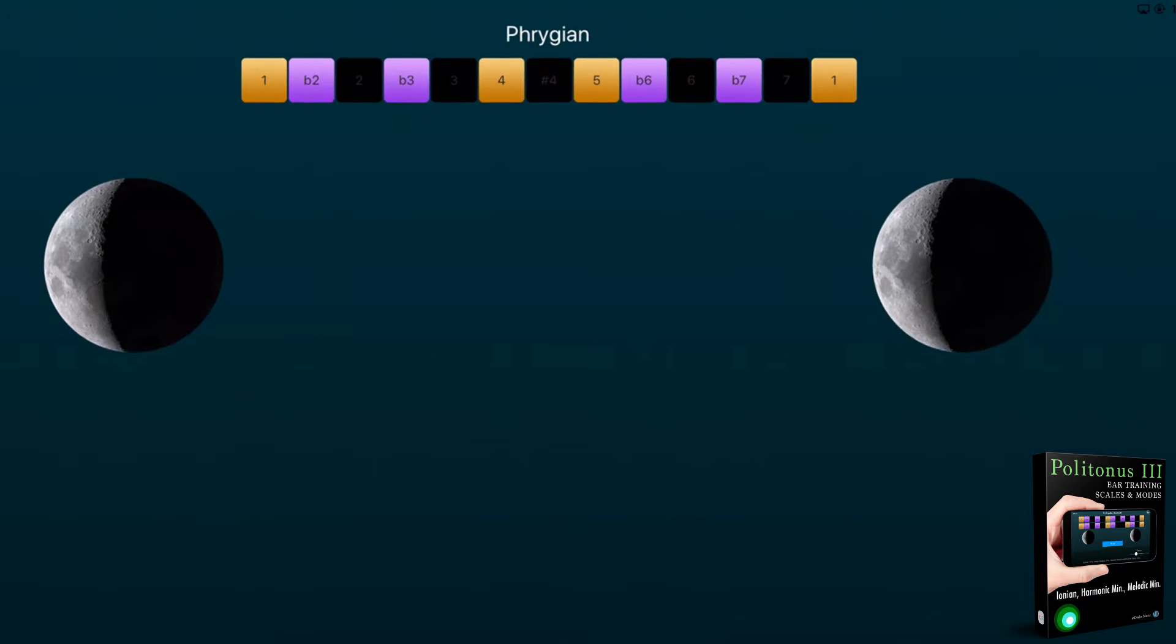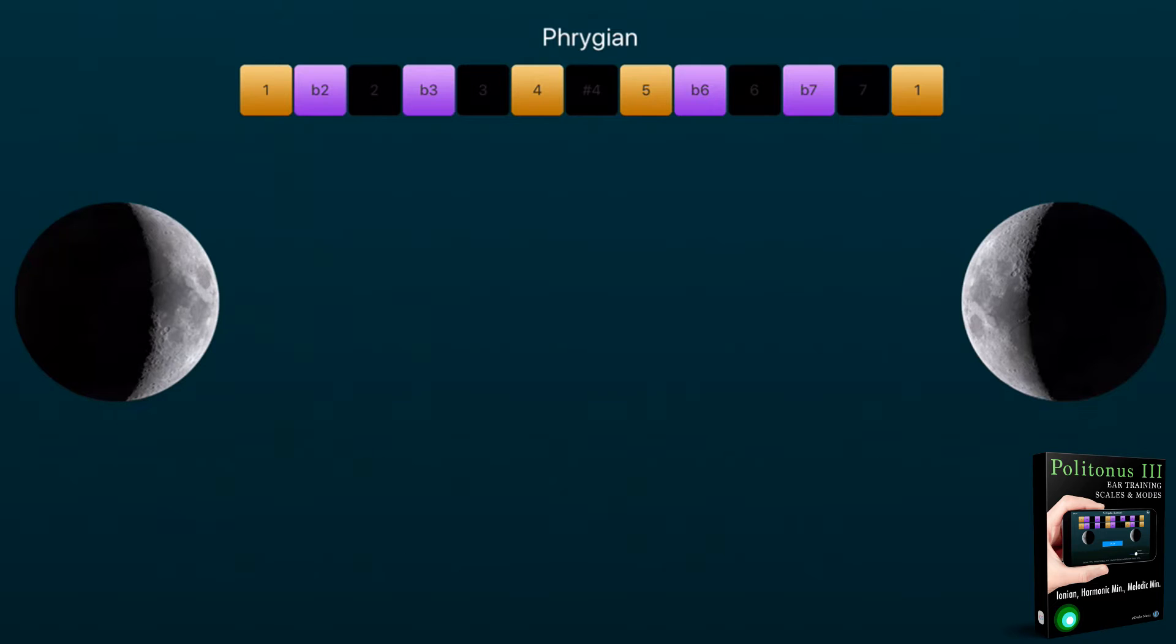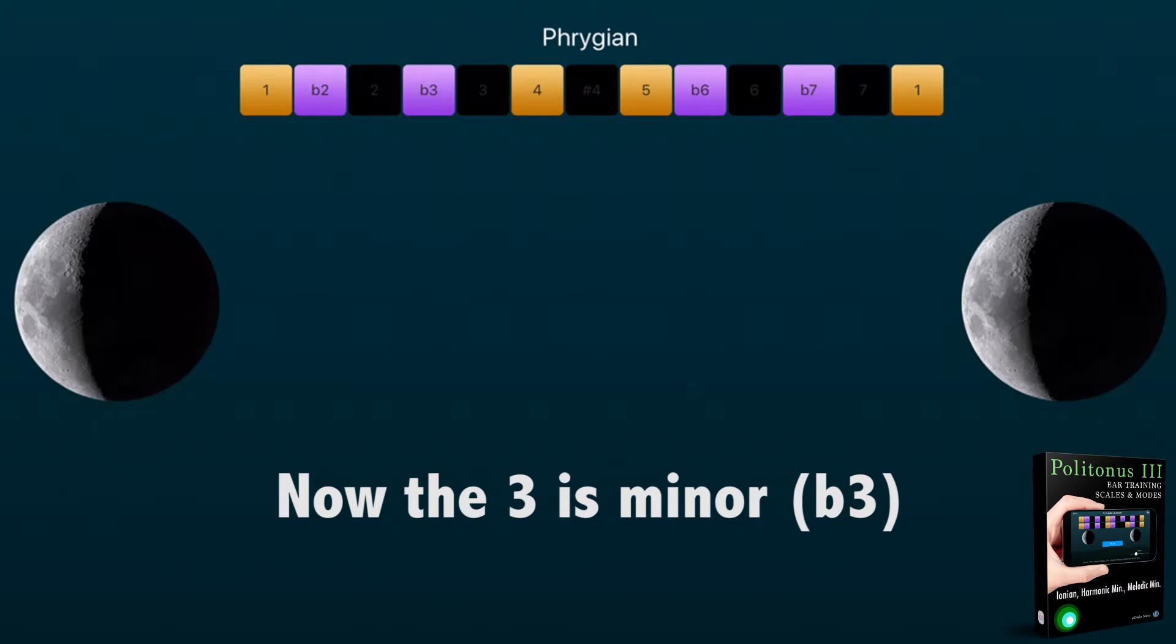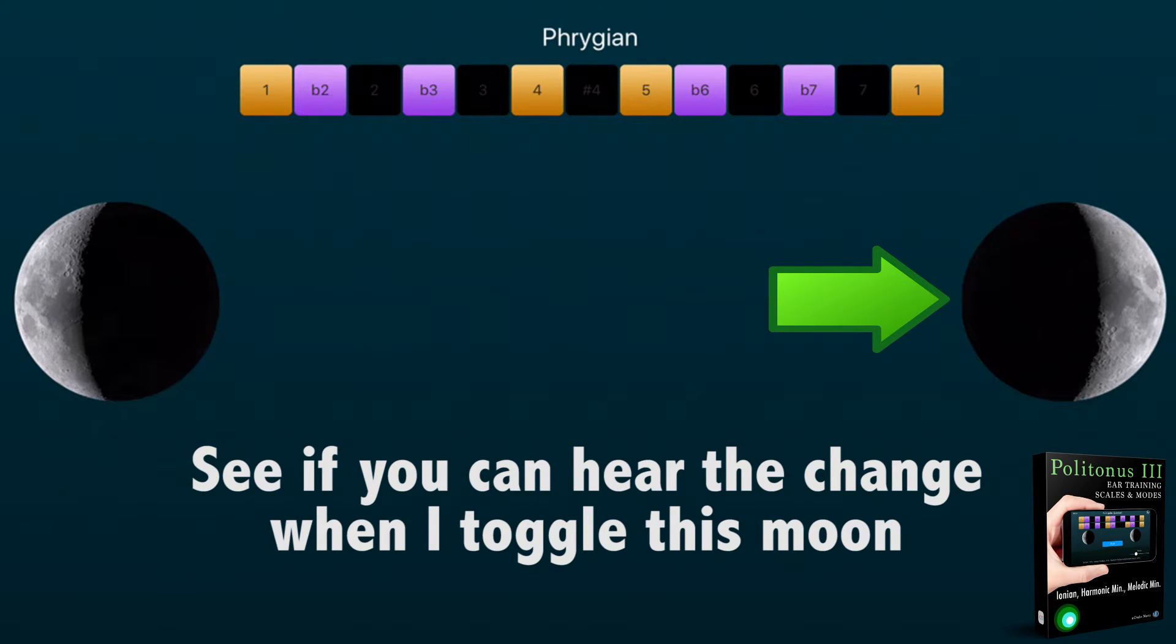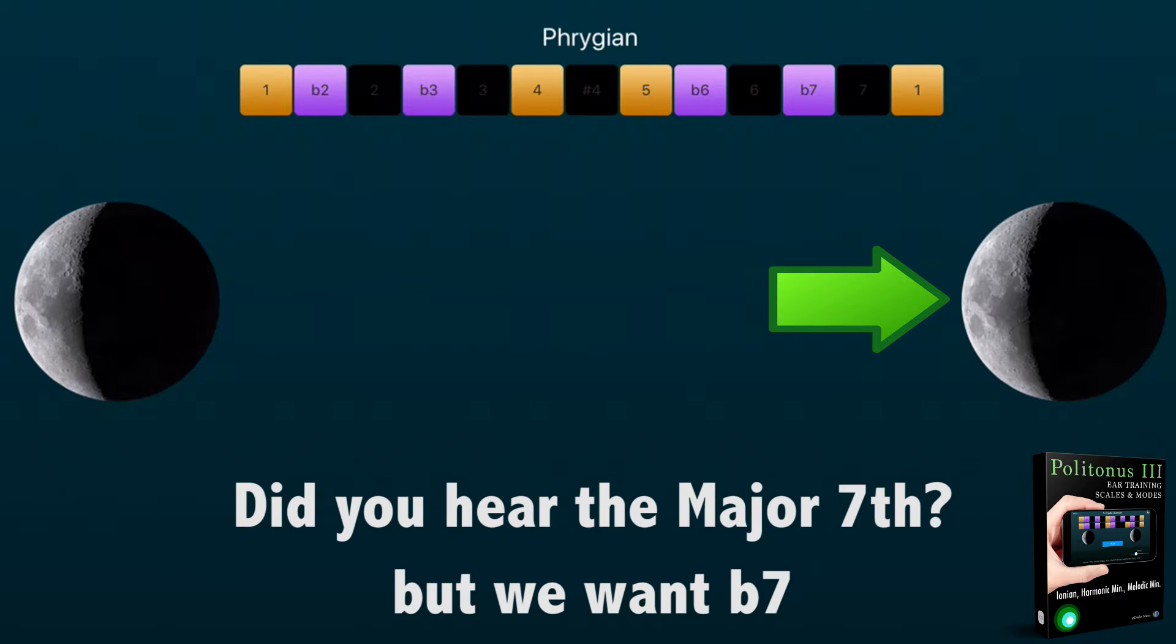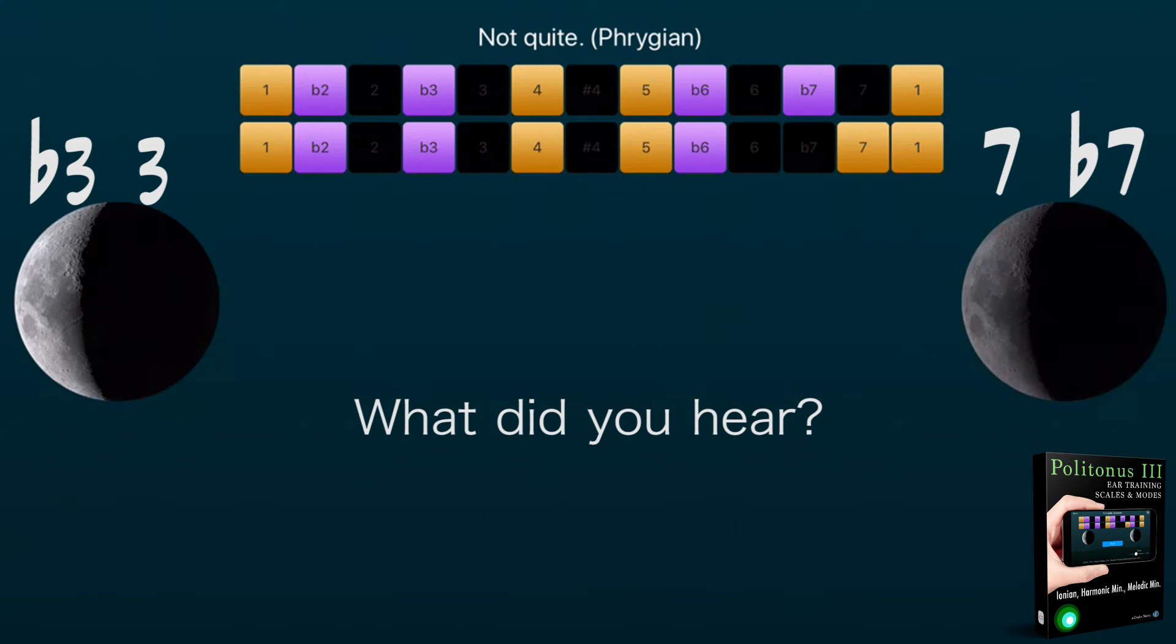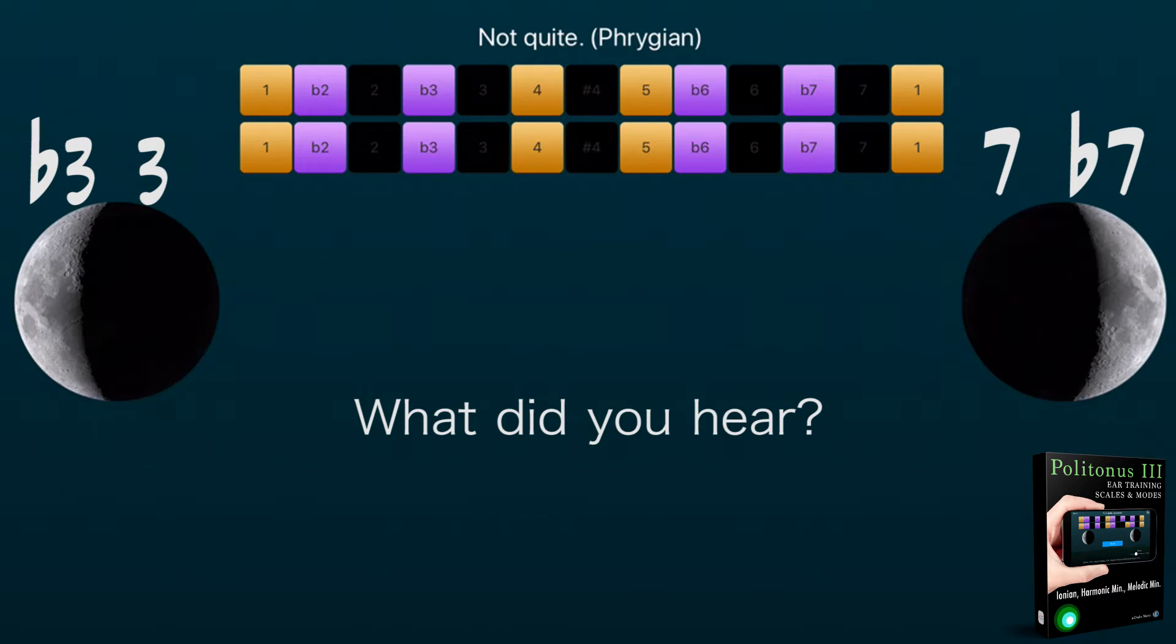Each half moon controls one degree in the scale. I can hear this moon is controlling the third and this one is controlling the seventh. I'll leave it like that so you can see what I'm talking about. That was not Phrygian because the seventh was major. Now you can tap on the half moons to see what they were controlling. Let's try another one.